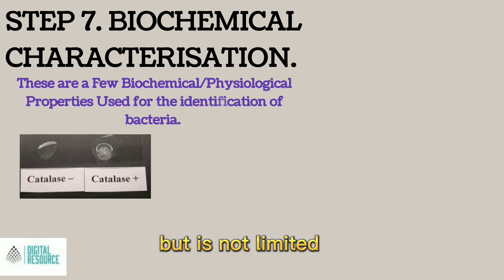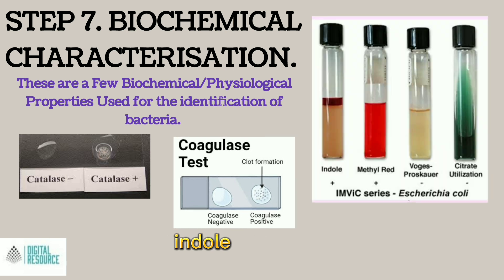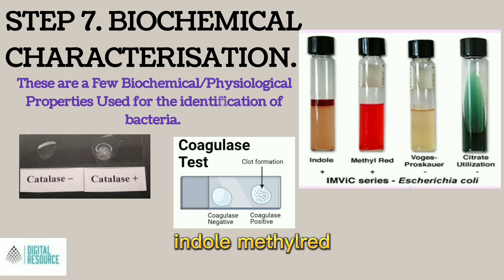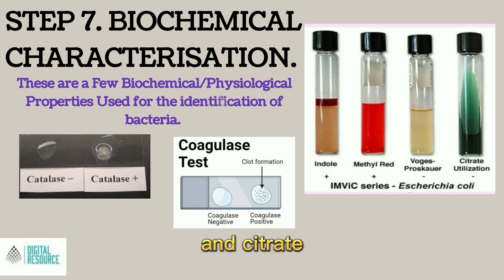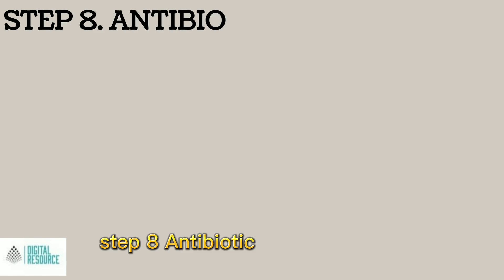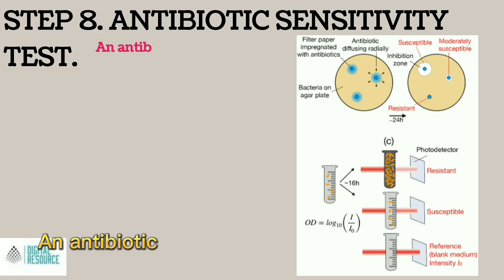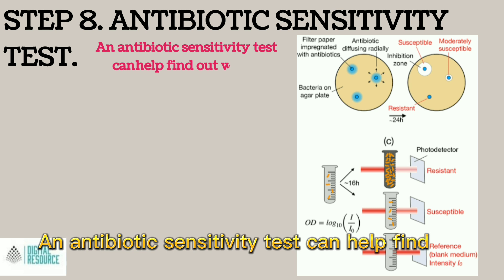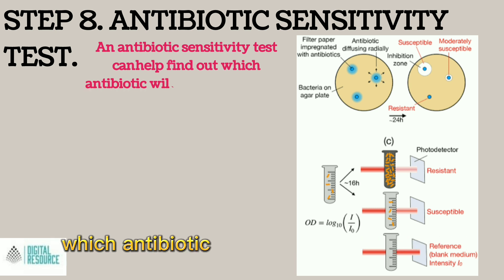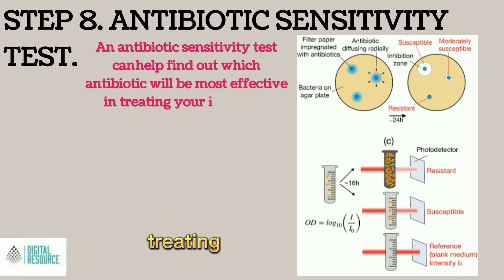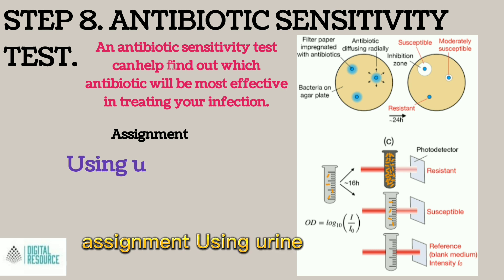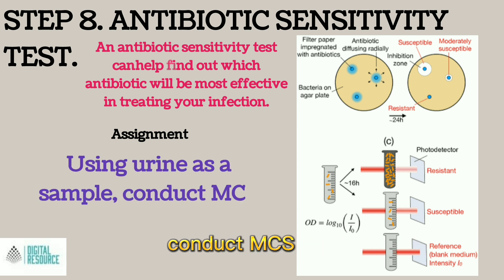Step 7: Biochemical Characterization. A few biochemical and physiological properties are used for the identification of bacteria. These include but are not limited to catalase, coagulase, indole, methyl red, Voges-Proskauer, and citrate utilization test. Step 8: Antibiotic Sensitivity Test. An antibiotic sensitivity test can help find out which antibiotic will be most effective in treating your infection. Assignment: Using urine as a sample, conduct an MCS test. Thank you.